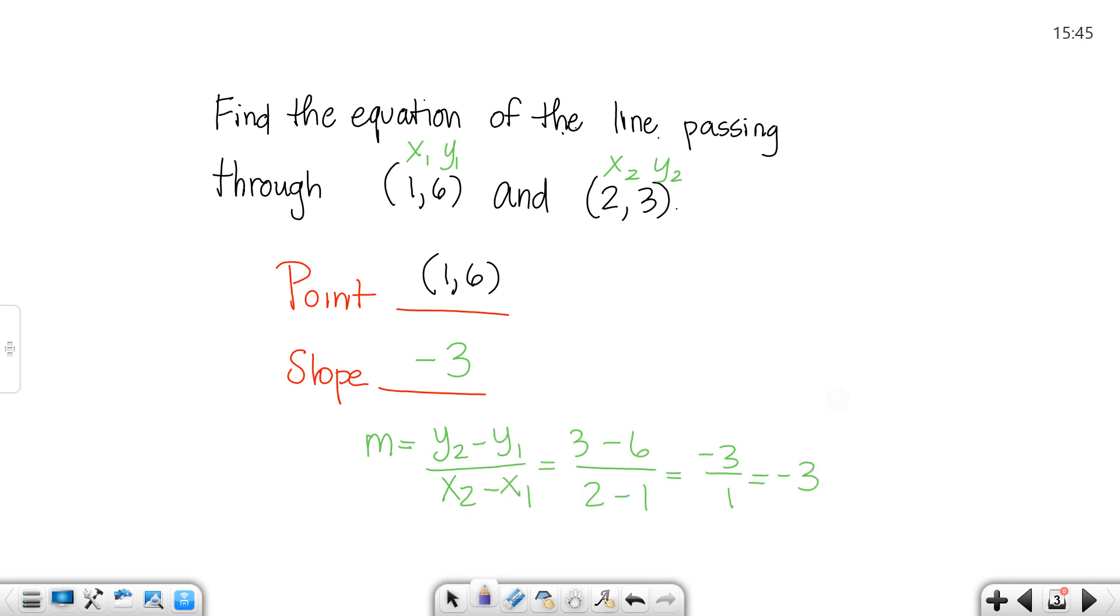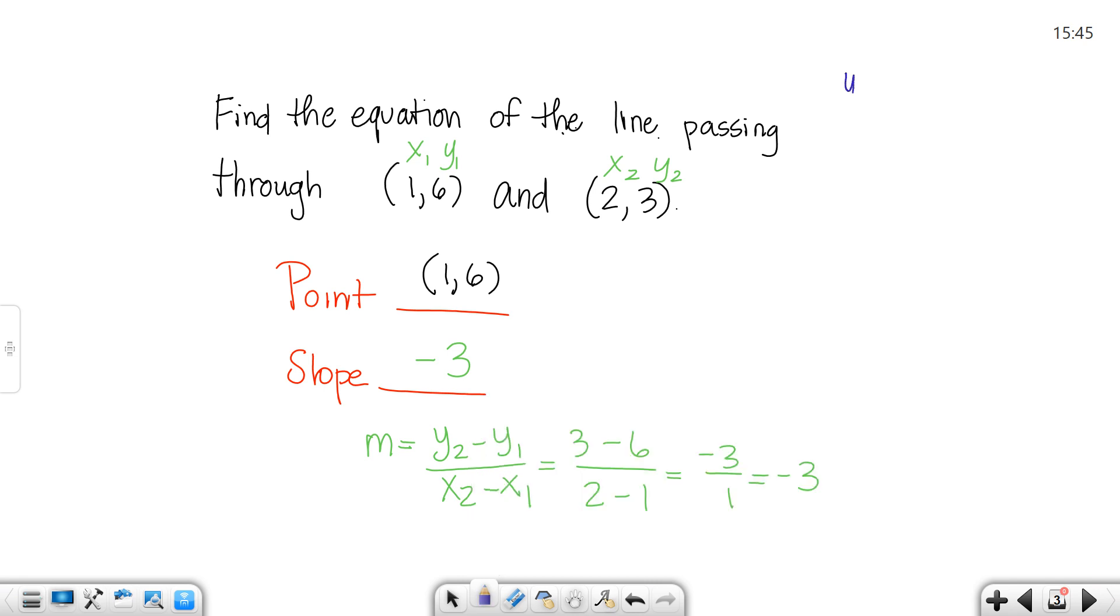Now, all I have to do is put it into my point-slope formula. So, y minus y₁ equals m times x minus x₁. So, labeling my values, this would be x₁ and y₁. This would be m. So, we would say, y minus 6 equals negative 3 times x minus 1. Okay, clean it up and be careful with your signs.